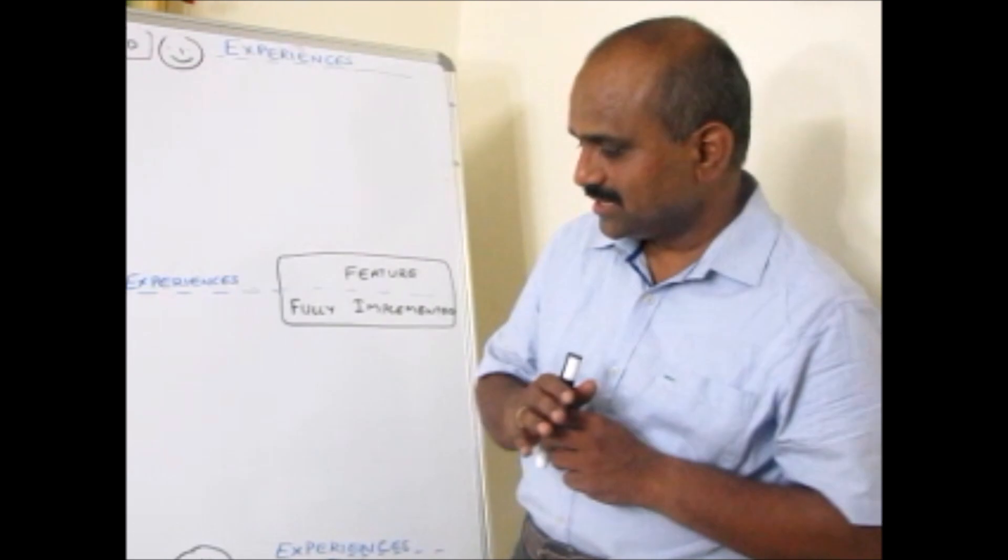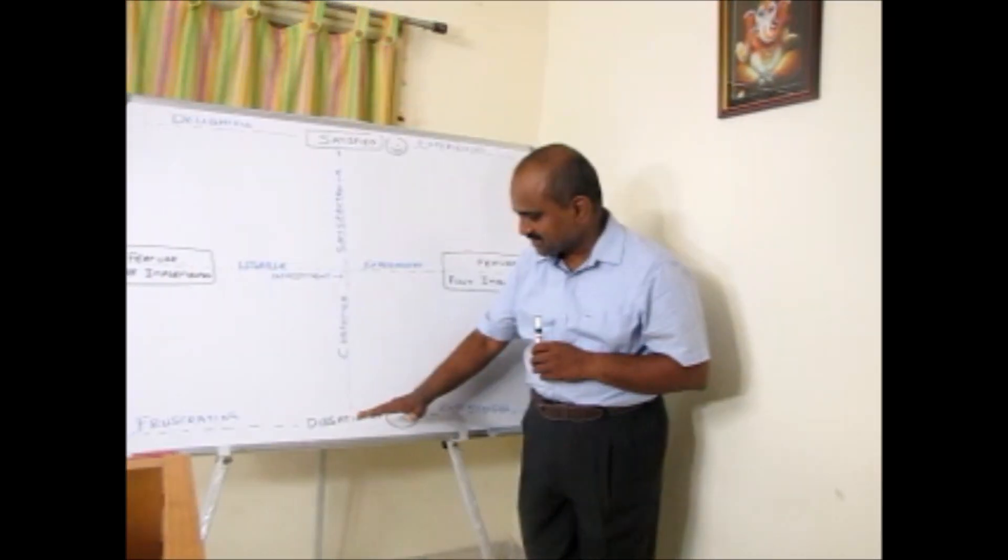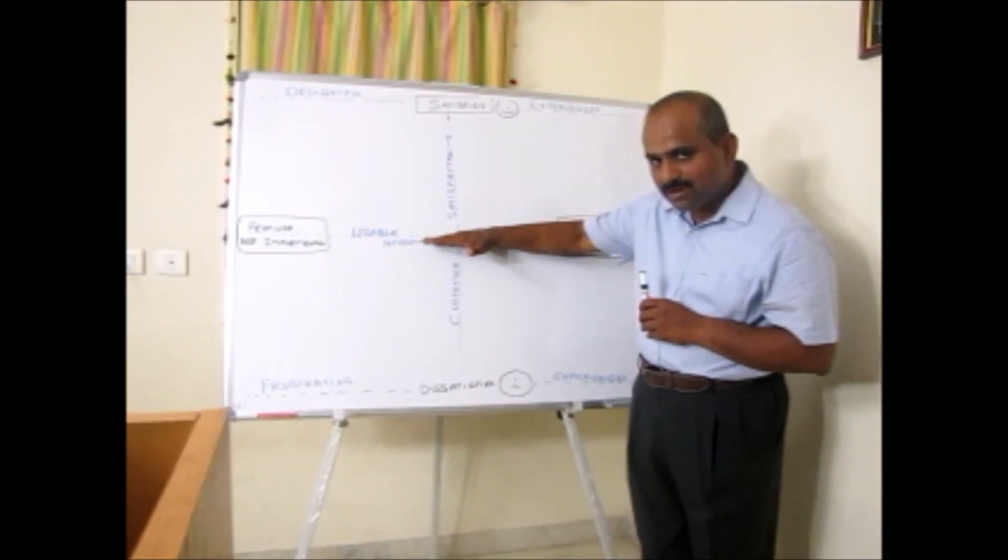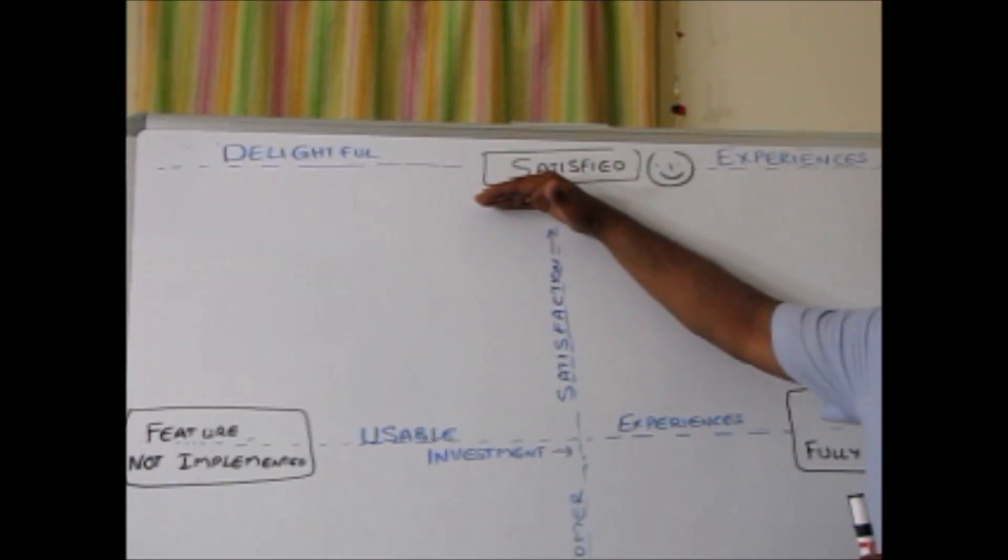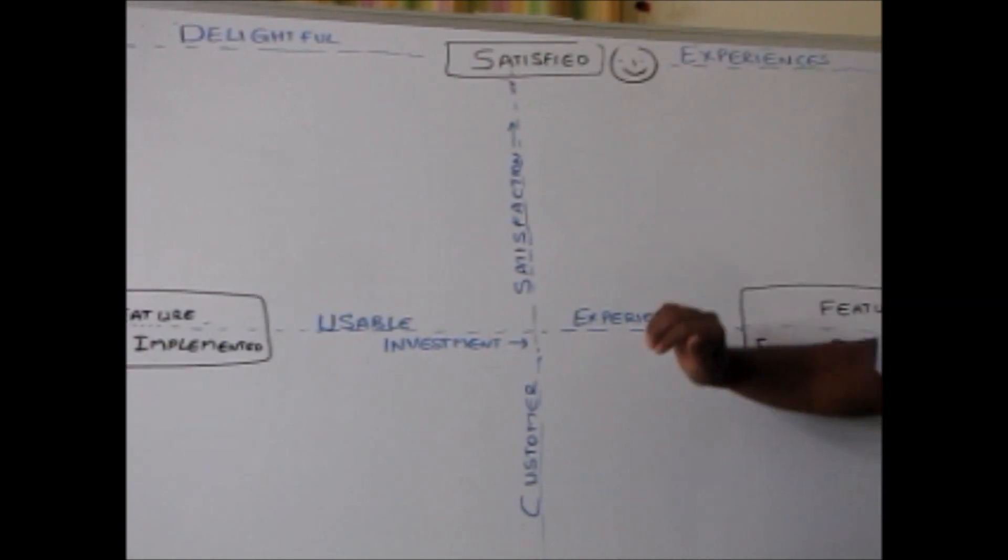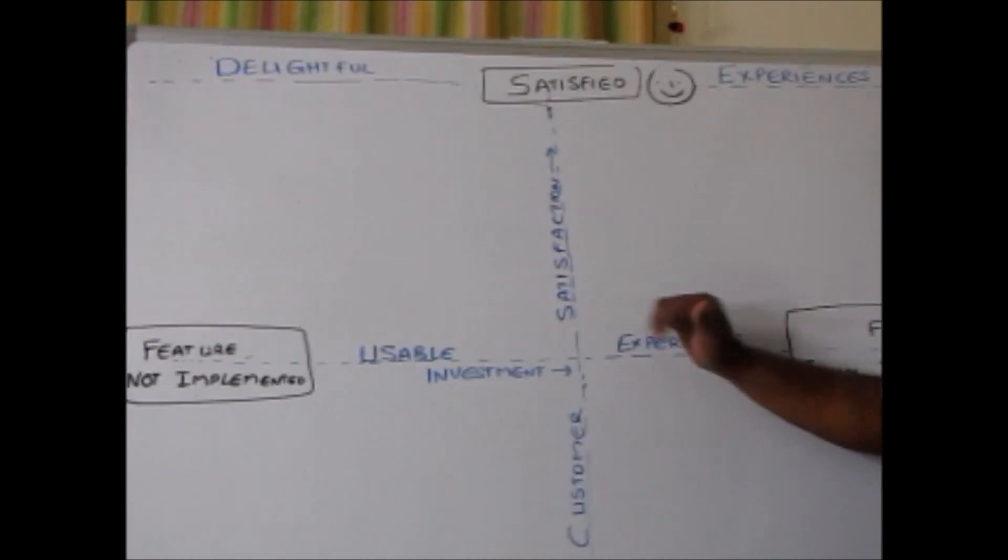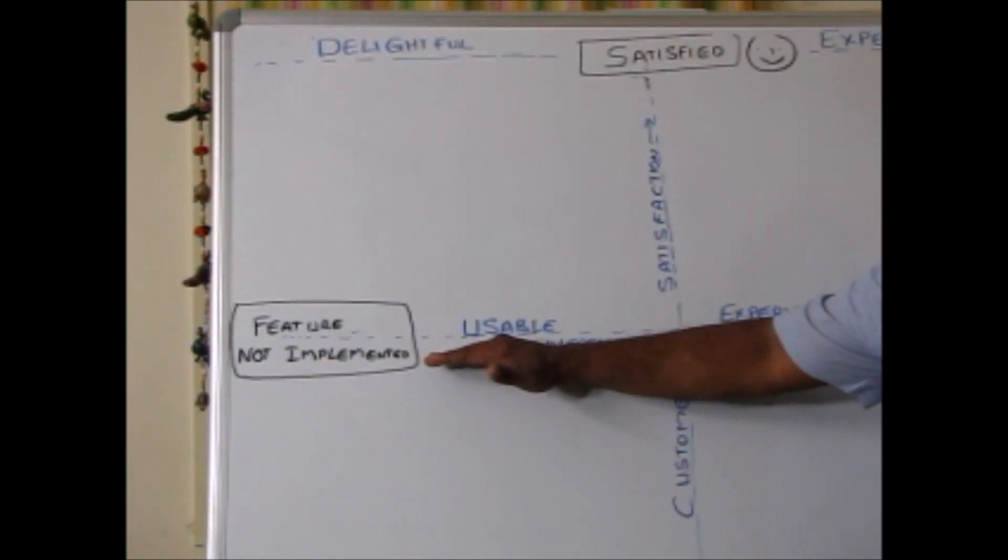It predominantly puts the product and customer experience into three segments: dissatisfied end users, usable or satisfied users, and very satisfied or delightful users. The y-axis is customer satisfaction. The x-axis is usable experience or satisfied experience. It's basically investment from the organization point of view.